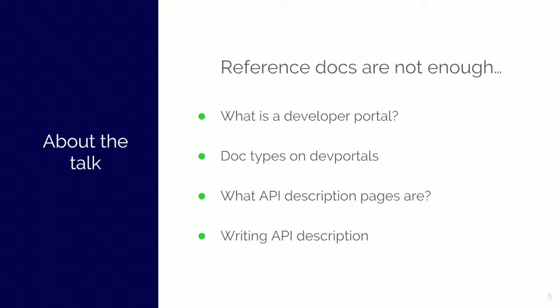After that, we define the role of the API description pages — what they are exactly, who the target audience of these pages is, what information they contain, and so on. And then finally, I would like to present a possible method to write API description content, and show a template as an example, as a demonstration.